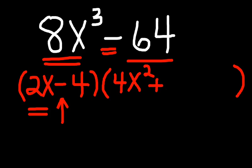And then I multiply the first term and the second term together. 2x times 4 is 8x. That's my second term.